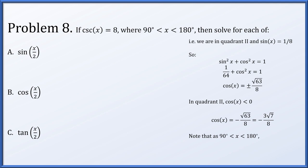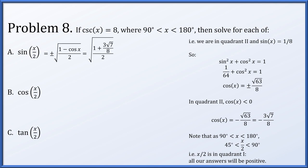Also, since x is between 90 and 180 degrees, x over 2 is between 45 and 90 degrees. In other words, x over 2 is definitely in quadrant 1. So all of our answers — sine, cosine, and tangent of x over 2 — if we're given an option between positive and negative, because x over 2 is in quadrant 1, we will pick the positive.